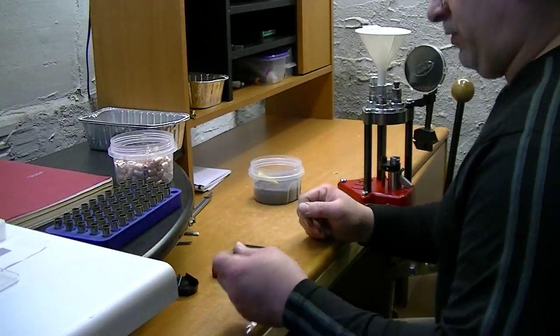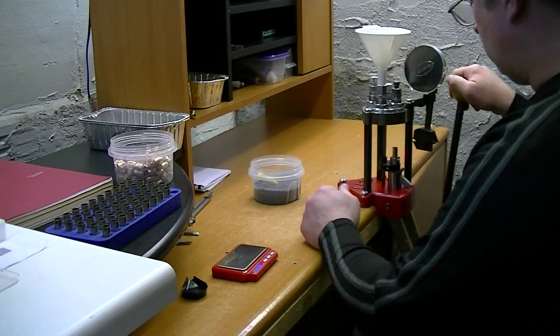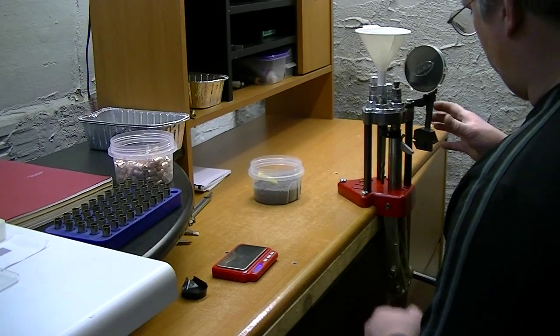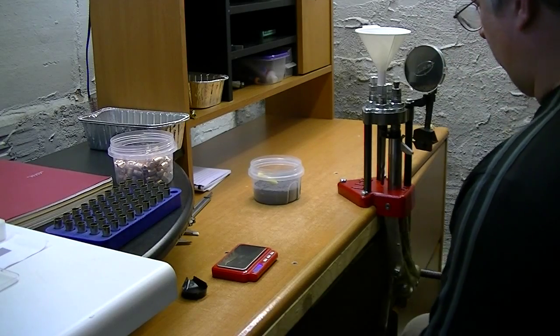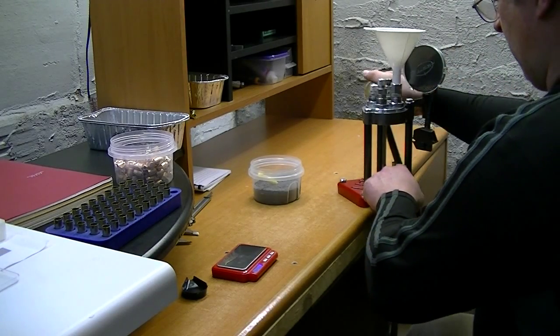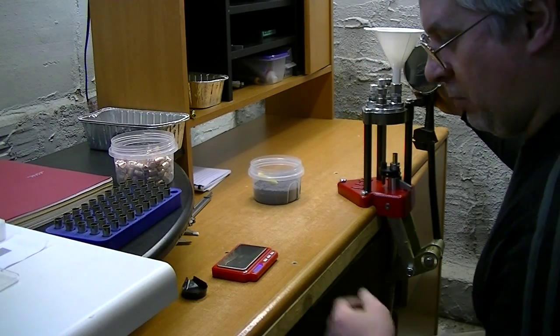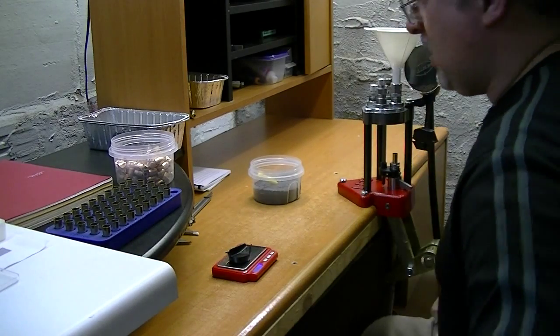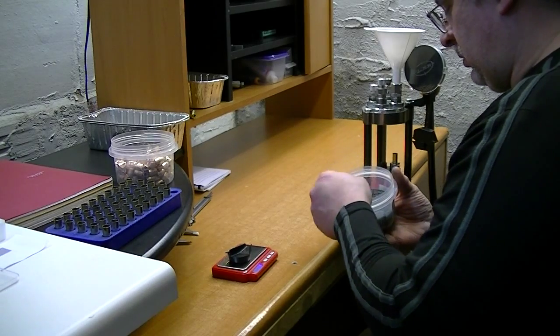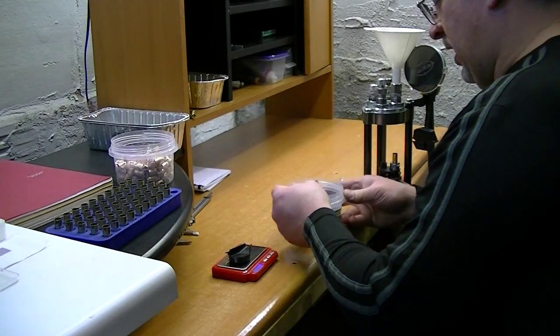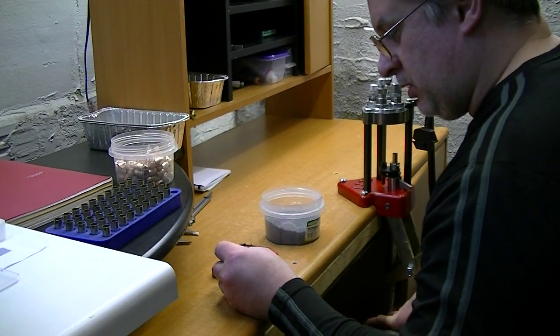I've already got a pan of about 50 right there. I took the decapping rod out of this since I've already used my universal decapper to decap these. The reason that I did that is I ran into a lot of trouble with Fiocci ammo, with the flash holes being way off center. And the first decapping rod that I had in this die ended up bending because of it.